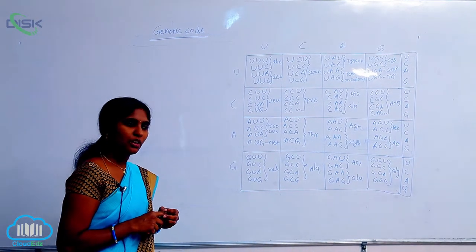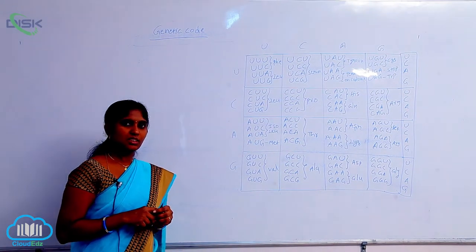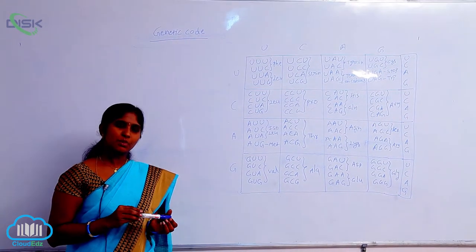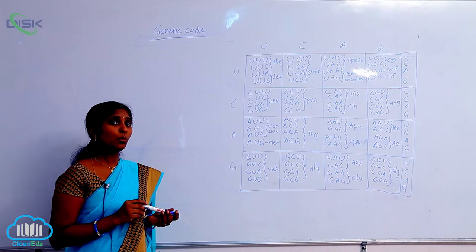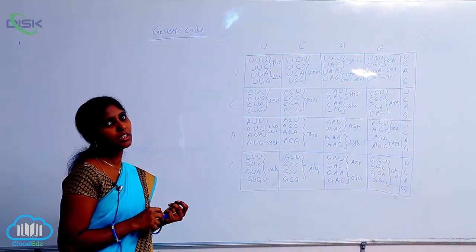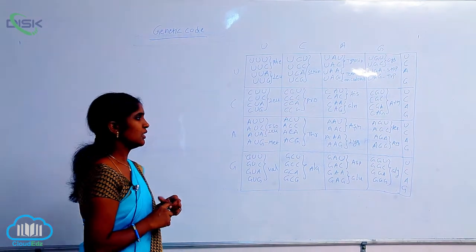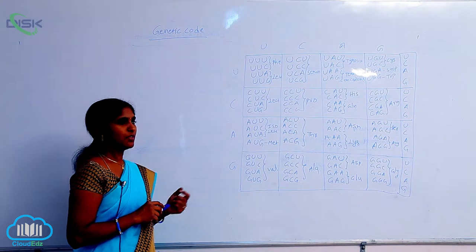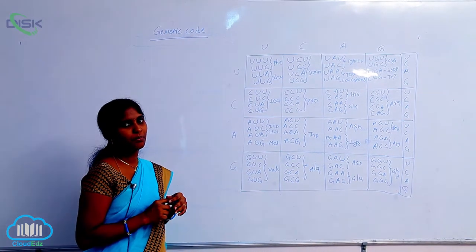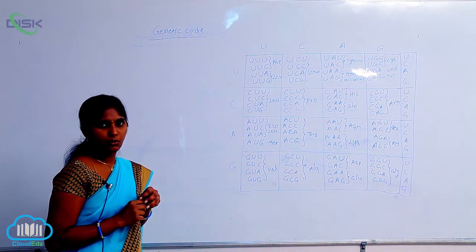The genetic code is given by the scientist Crick. According to him, a genetic codon is a sequence of nucleotides which specifies the amino acid coding — that is called genetic codon or genetic code. Here in the genetic codon, we see codons in triplet form. Each codon can code one specific amino acid.